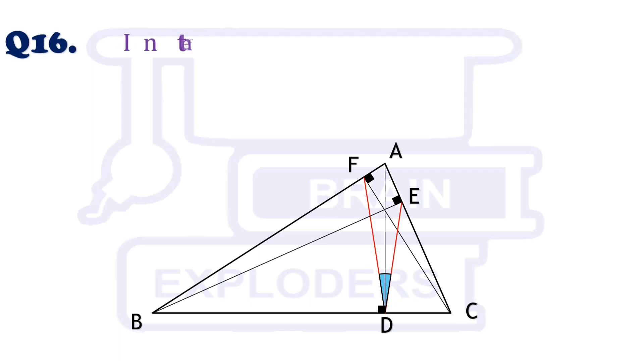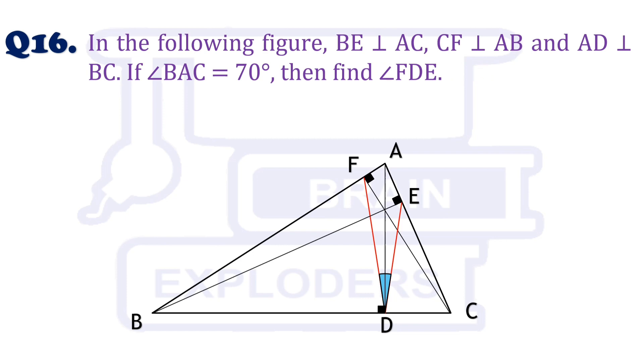In the following figure, BE is perpendicular to AC, CF is perpendicular to AB, and AD is perpendicular to BC. If angle BAC is equal to 70 degrees, then find angle FDE.